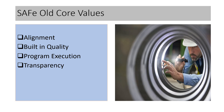So these were the old core values — I did a video on the old core values and I will share a link in the description, you guys can check the details of that video as well. Before SAFe 6.0, the old core values were: alignment, built-in quality, program execution, and transparency.